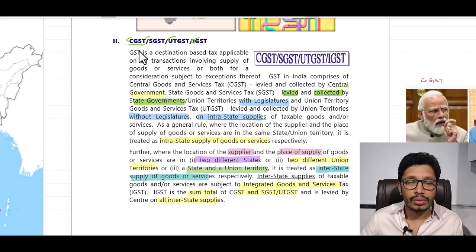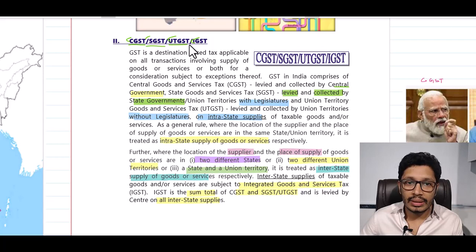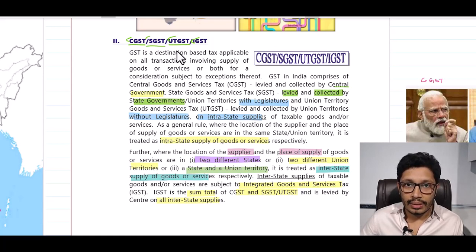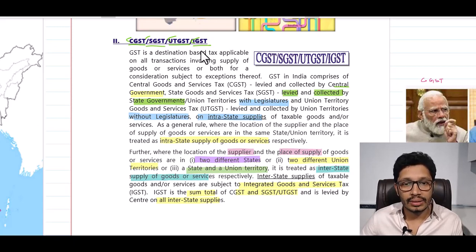CGST stands for Central Goods and Service Tax. SGST stands for State Goods and Service Tax. UTGST stands for Union Territory Goods and Service Tax, and IGST stands for Integrated Goods and Service Tax.